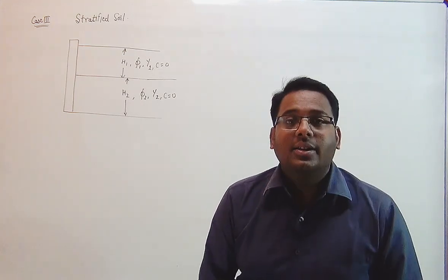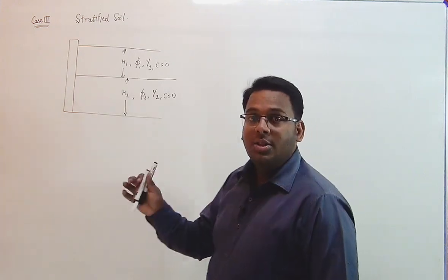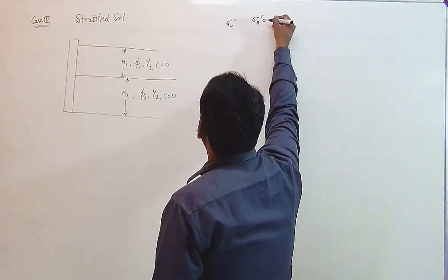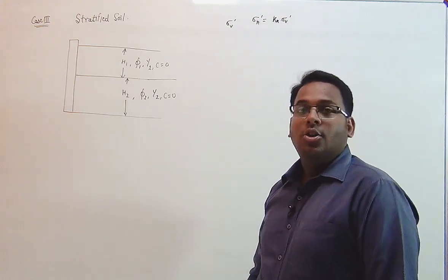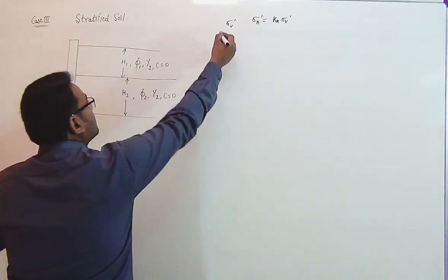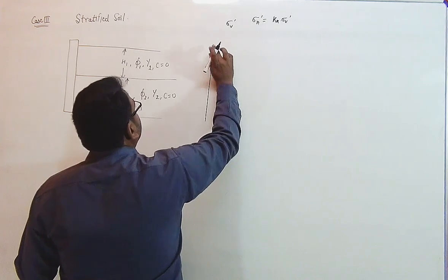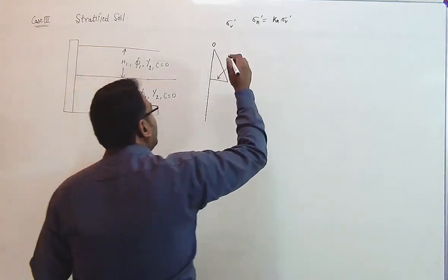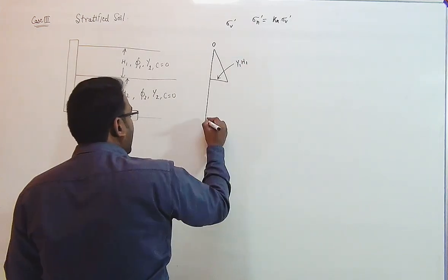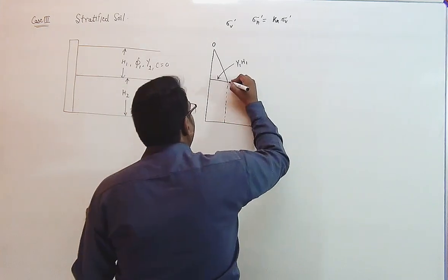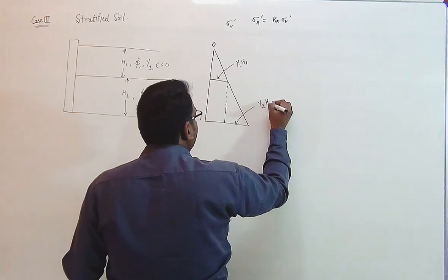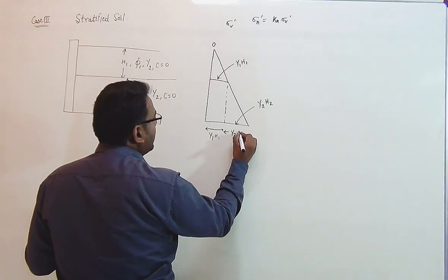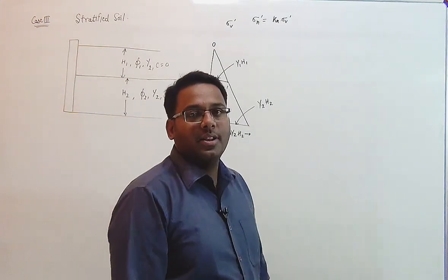Now we are going to start drawing the earth pressure diagram. To do so, we must calculate the effective vertical stress, since the horizontal stress equals Ka times sigma_v'. To plot the variation of sigma_v', the effective stress is 0 at the top. For the first h1 depth, the stress increases at a rate of gamma1. After that, the weight of the first soil remains constant and the second soil's weight increases at a rate of gamma2. The effective stress at the bottom equals gamma1·h1 + gamma2·h2. This is the effective stress diagram as plotted in the chapter on effective stress.